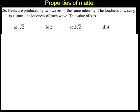Question number 26. Beats are produced by two waves of the same intensity. The loudness at waxing is x times the loudness of each wave. The value of x is - the alternatives are √2, 2, 2√2, and 4.